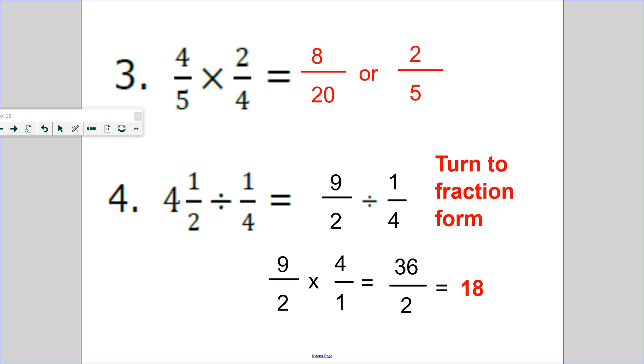Number three: how do you multiply fractions? To multiply fractions, you multiply the numerator: 4 times 2 is 8. Then you multiply the denominator: 5 times 4 is 20. Now we need to simplify it. Divide by 4, and you get 2/5.